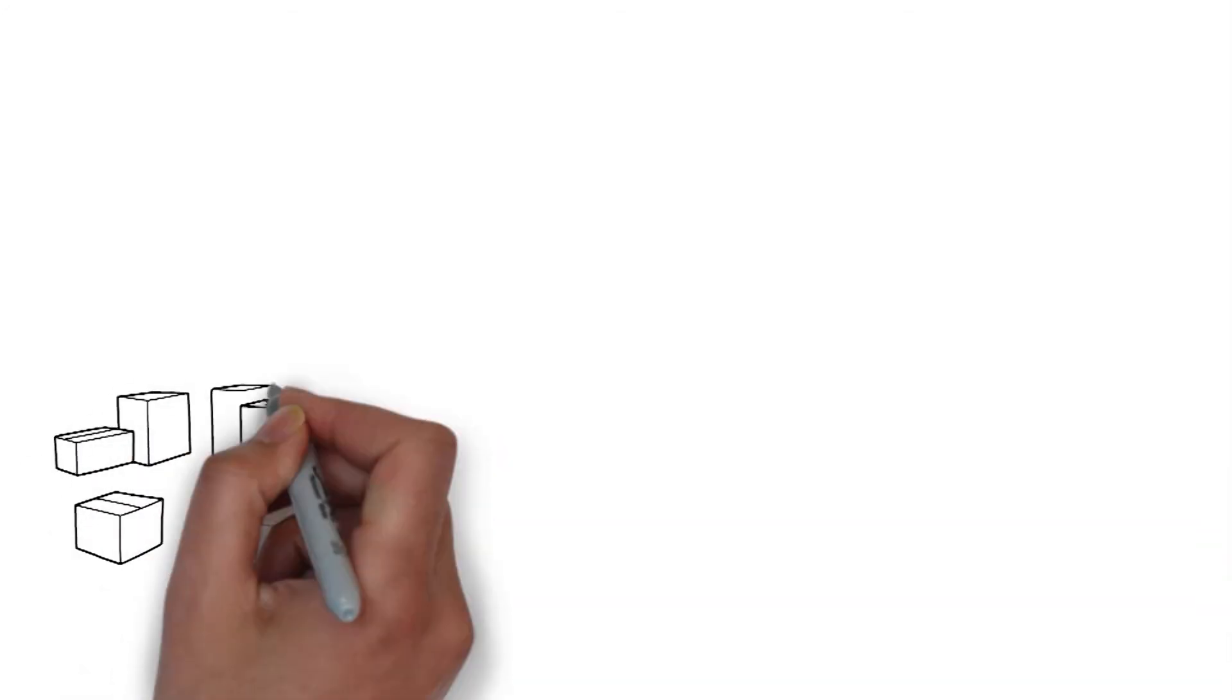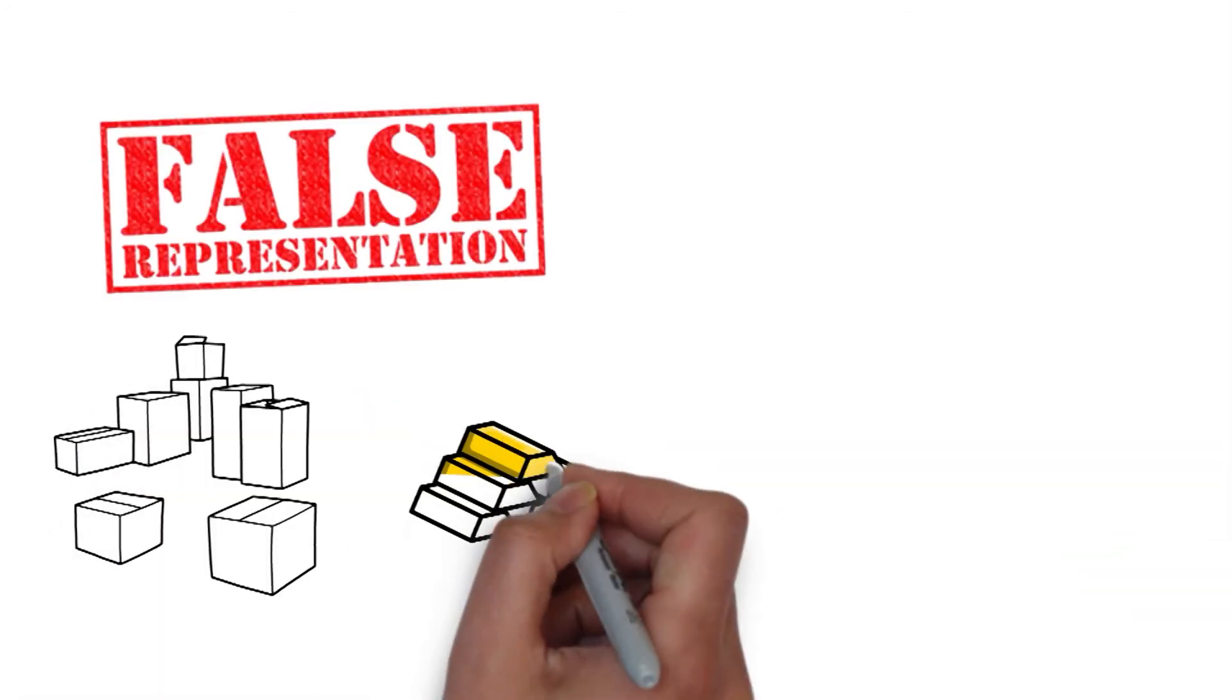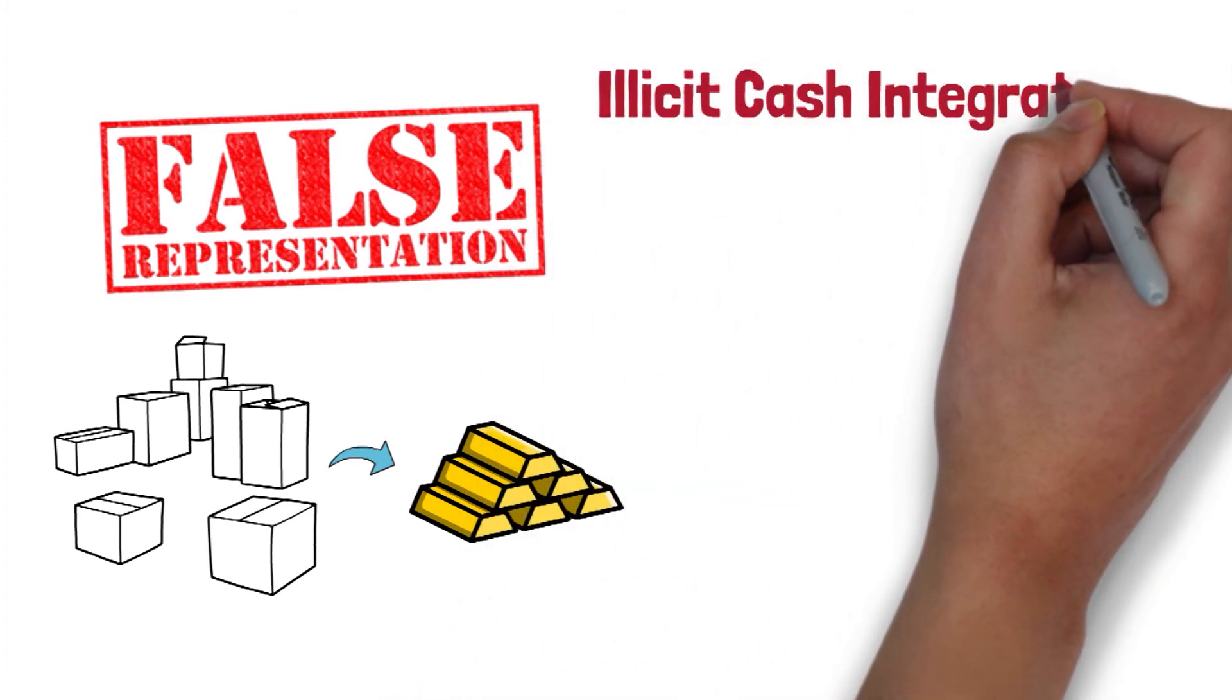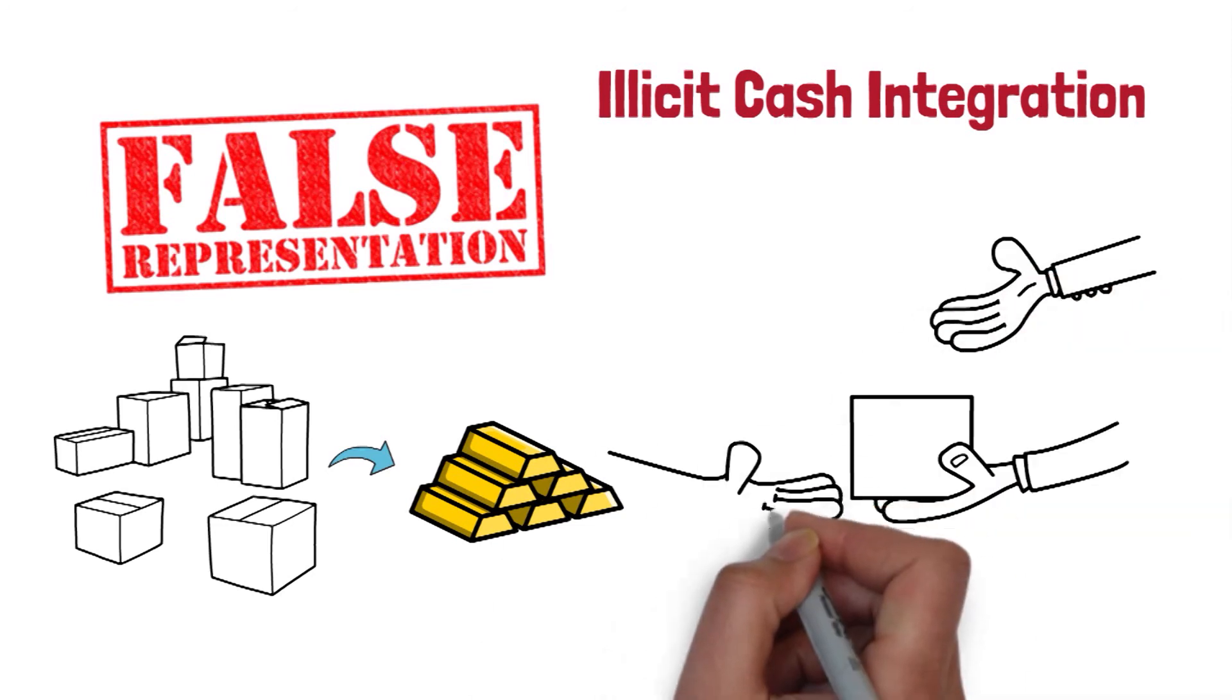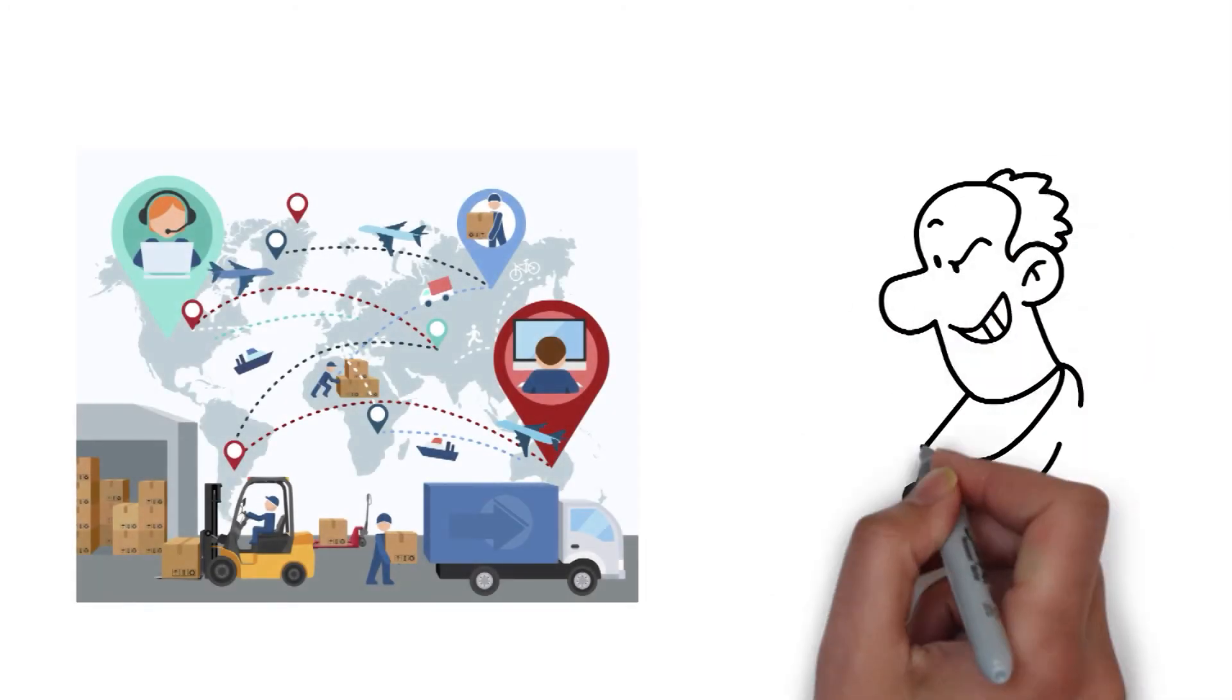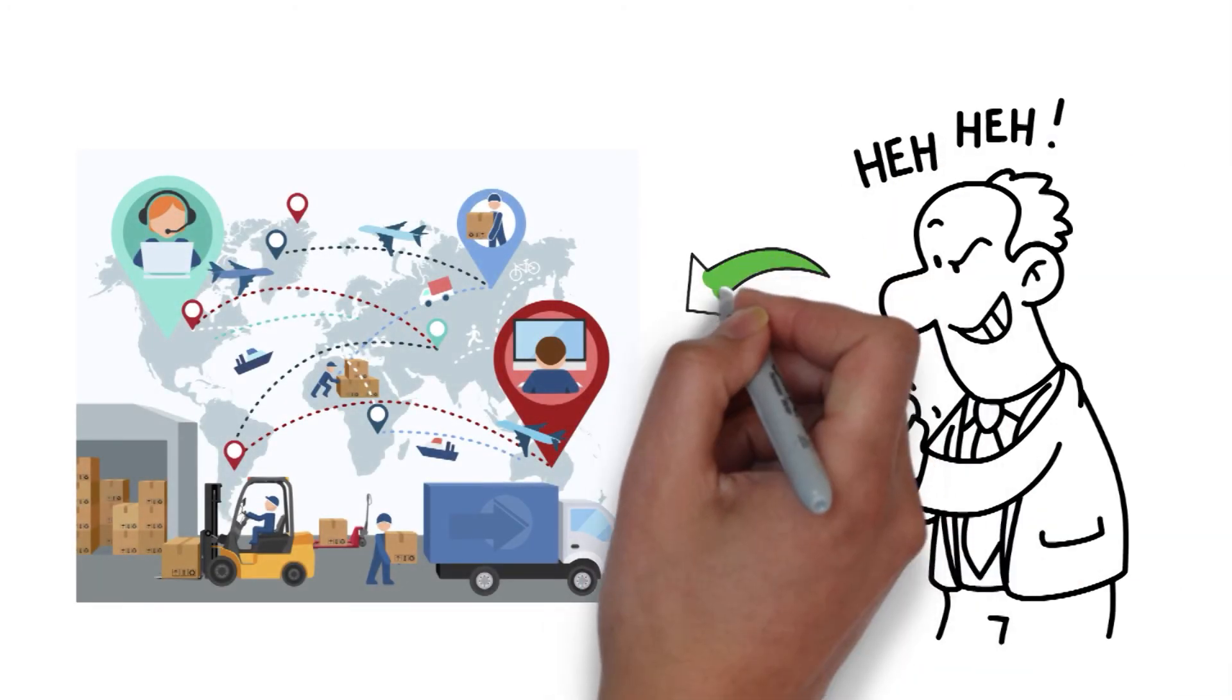Misrepresentation of the type of good, which is described as a more expensive item to justify the money paid, illicit cash integration such as using the black market to dispose of the illicit cash, and penetrating legitimate supply chains by paying for the goods through third parties.